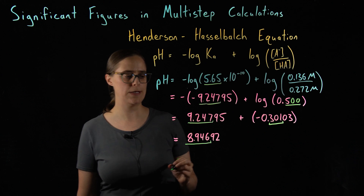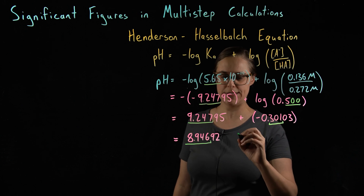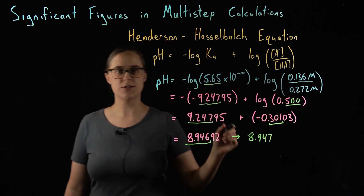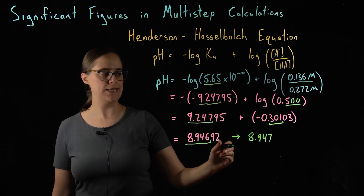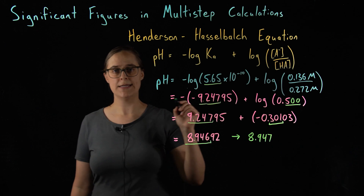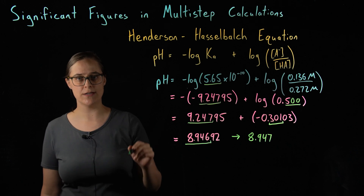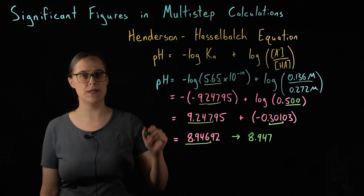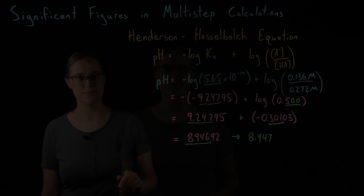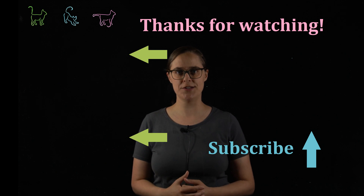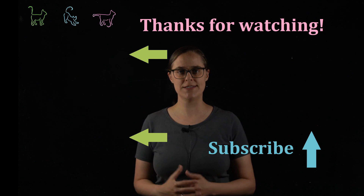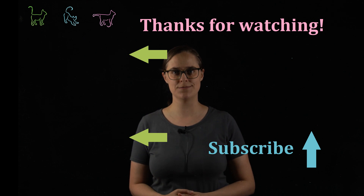This needs to be rounded to three digits after the decimal place. So our correct answer is 8.947 — keeping track of significant figures after each step and rounding once at the end. Thanks for watching Chemistry in a Nutshell. If you feel that I've earned it, please like this video and subscribe to my channel.